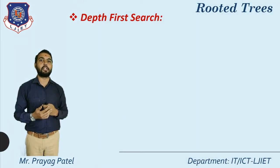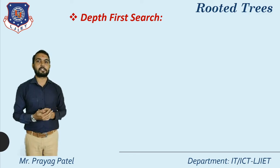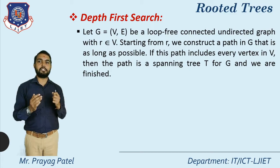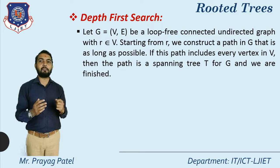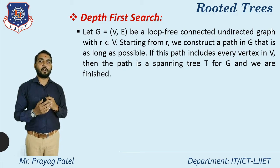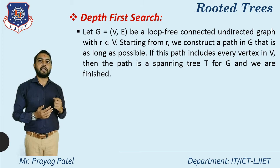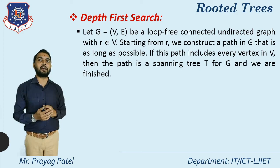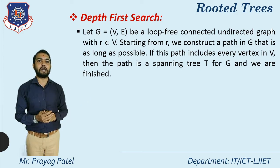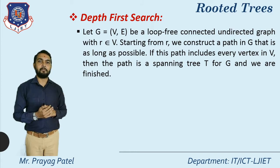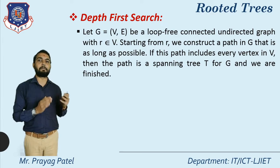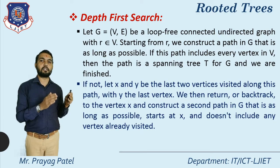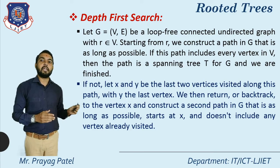For the routine, first is depth first search. In depth first search, let G equal to (V, E) be a loop-free connected undirected graph with r belonging to V. Starting from r, we construct a path in G that is as long as possible. If this path includes every vertex in V, then the path is a spanning tree T for the graph G, and we finish this process. Basically, we visit nodes depth-wise.